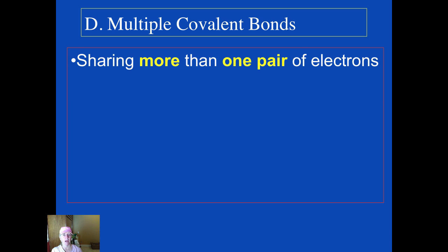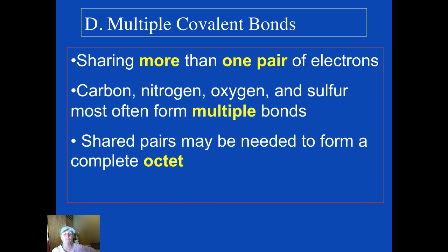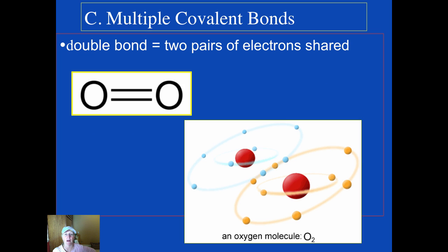Sometimes though, atoms can share more than one pair of electrons. You can share multiple bonds or have multiple bonds. You could have one pair of electrons being shared, you'd have two pairs, or even three. Carbon, nitrogen, oxygen, and sulfur can frequently form multiple bonds. It's the same driving force. They're trying to get a complete octet.